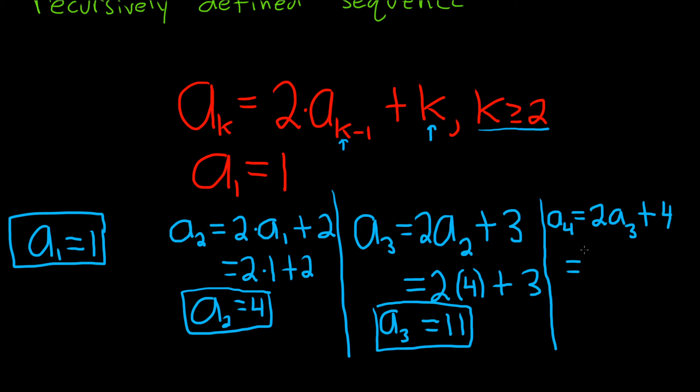This equals 2 times a sub 3, which is 11, so it's 2 times 11 plus 4. 2 times 11 is 22, so we have 22 plus 4, which is 26. So a sub 4 equals 26, and those would be the first four terms of the sequence.